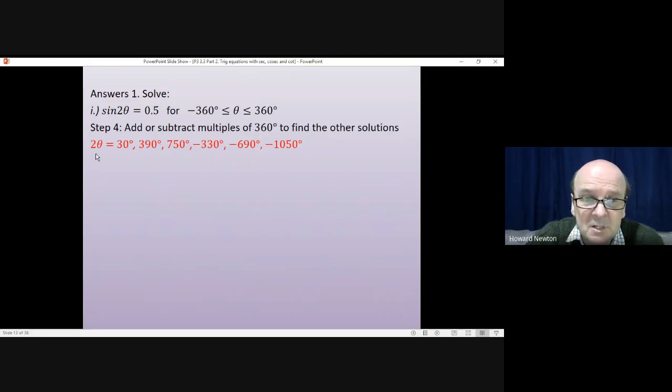We do the same thing with the second solution, the one that we found from symmetry. So the second solution from the symmetry of the curve was that 2θ could equal 150 degrees. We now add or subtract multiples of 360 to that. Adding on 360 will give us 510, add another 360 as that. Take away 360 from 150 will give us that. Take away 360, take away 360 and so on and so on.